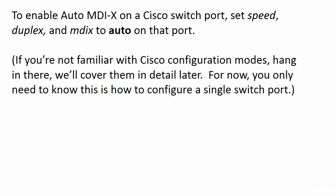To enable Auto MDIX on a Cisco switch port, and not all models run it, but if it does, then you need to set three things to Auto on the port that you want to run MDIX on: Speed, duplex, and MDIX. And I'm going to show you the config in a moment.